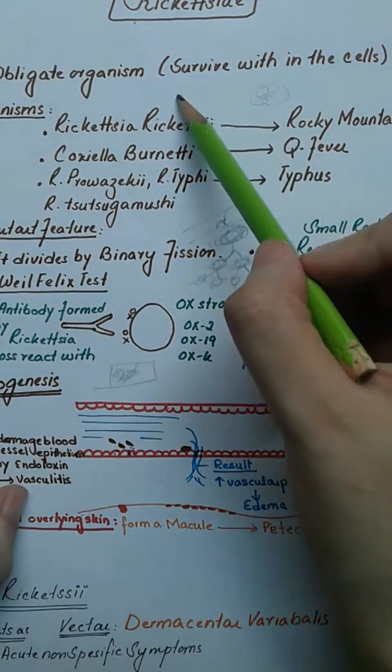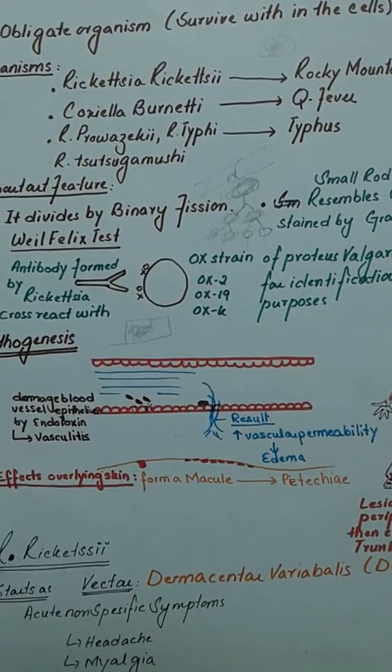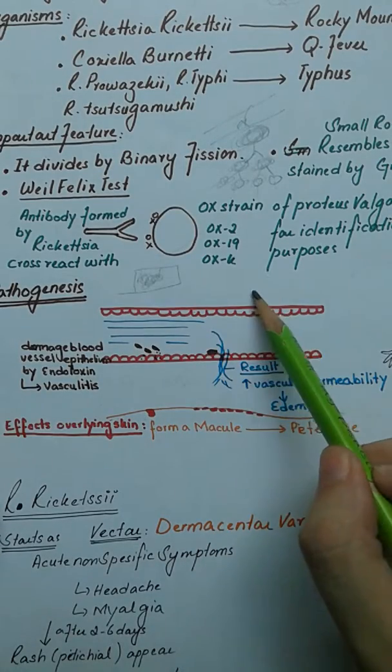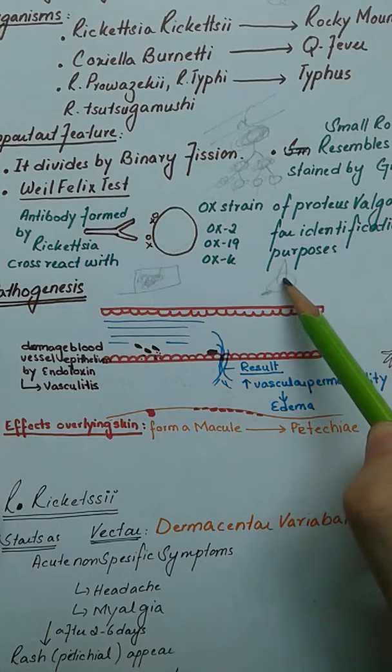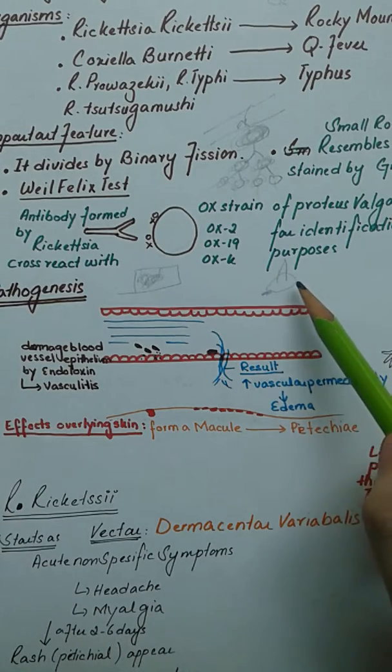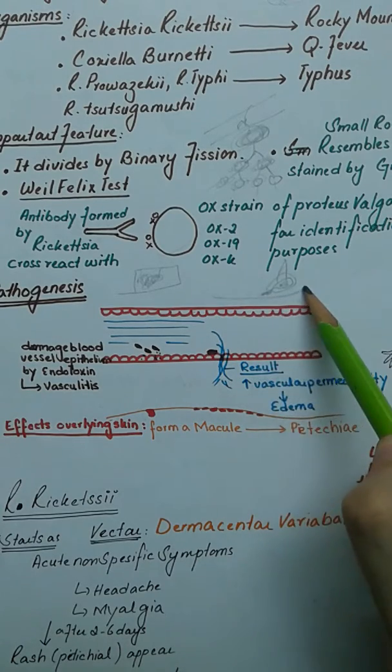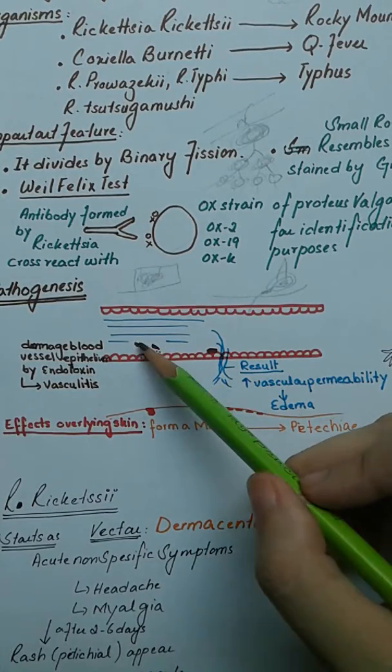Rickettsia enters the blood of the organism. There is a vector—a flea or louse—that carries this bacteria. Inside the vector's body, a trans-ovarian cycle occurs, forming many bacteria that come to the saliva. When the louse bites a person, the bacteria enters the blood and attaches itself or secretes a lot of endotoxin, as you can see by the dots here.